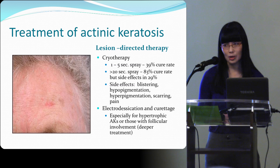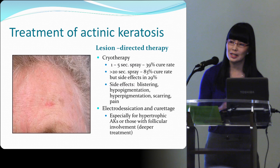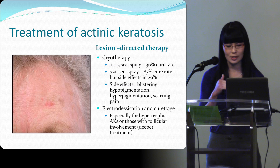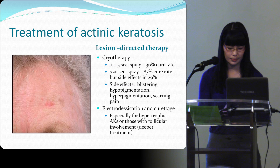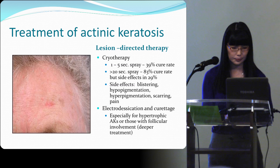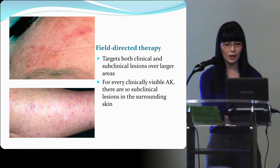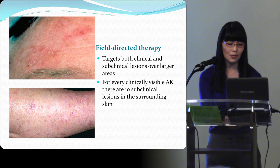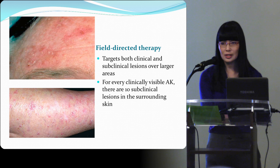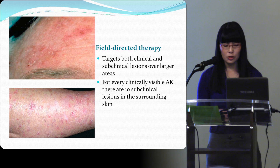Electrodesiccation and curettage can be very helpful for really hypertrophic lesions you probably won't clear with cryo, or those near the hairline where you need to get deeper due to possible extension to the hair follicles. When you can't tell where the cancer or actinic keratosis starts and ends, or you have multiple lesions on an area — as we see a lot of in the Okanagan — you're going to do field therapy.